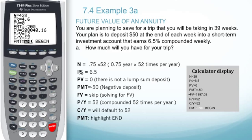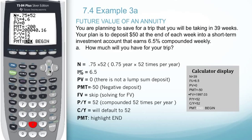For N, we want to take the number of years, which in this case would be 39 out of 52, or 0.75, times the number of compounding periods, which would be 52. We can also notice that that turns out to be 39 — that's how many payments we are actually making on this particular problem. So you can actually just enter in the number of payments that you're making.